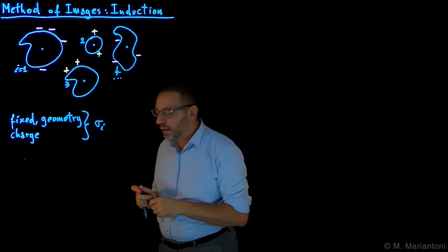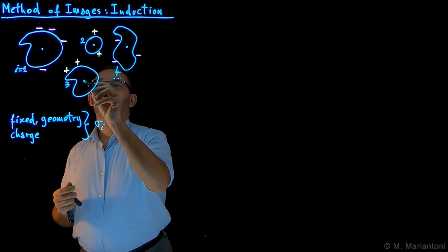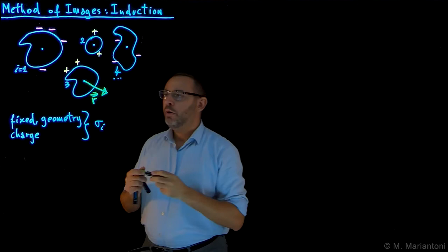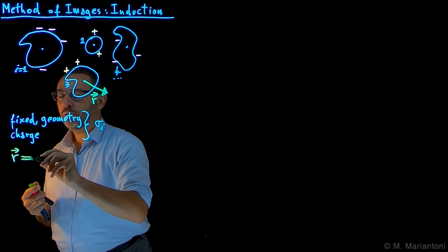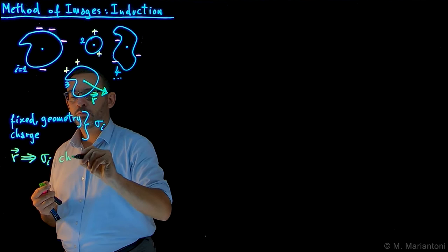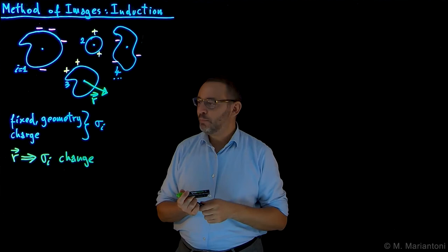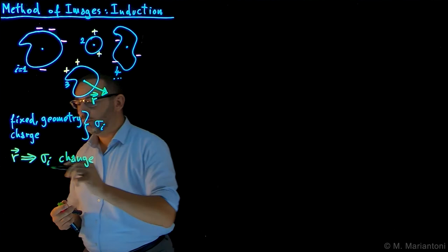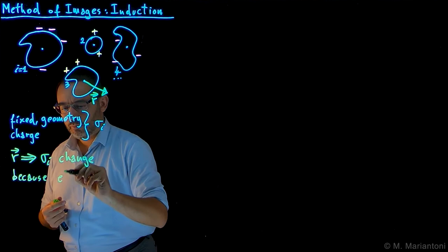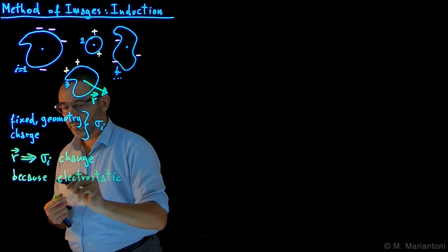Now, what happens if we move one of these conductors? If we displace this conductor by a displacement r, clearly the various sigma_i's will change. Think about it for a second — they change because of electrostatic induction. This is something we have seen in FIS 242 already.